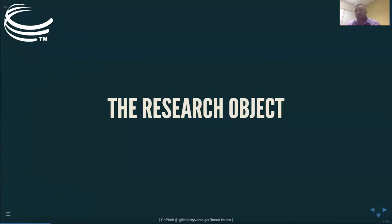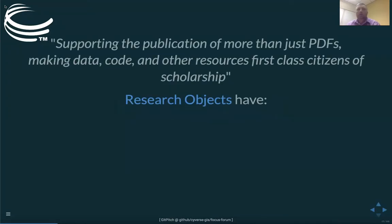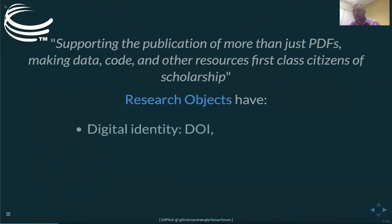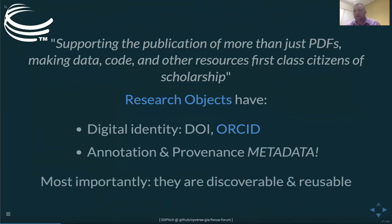The research object is a way for identifying, aggregating, and exchanging scholarly information in a digital format. The research object website has a short quote: 'supporting the publication of more than just PDFs.' We're moving beyond just the physical paper you publish your science with, making data, code, and other resources first-class citizens of scholarship. Your code and data are almost as important as the paper you publish, and these things all need to be combined into a single thing — that's what the research object is. In order to have a research object, you need a way of tracking it, meaning it has a digital identifier number or ORCID ID, annotation and provenance so you know where it came from — essentially metadata — and most importantly, the data are discoverable and reusable.